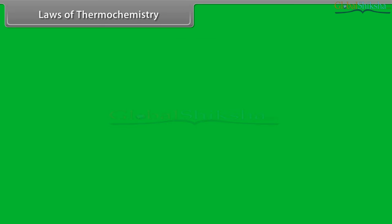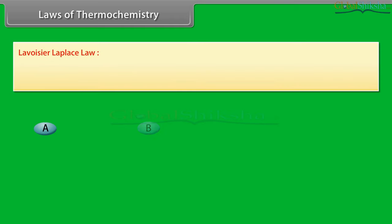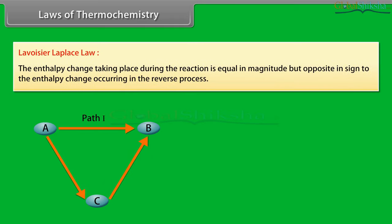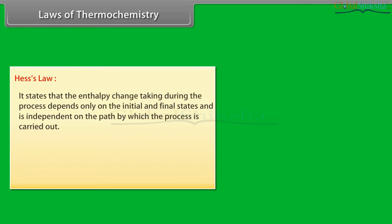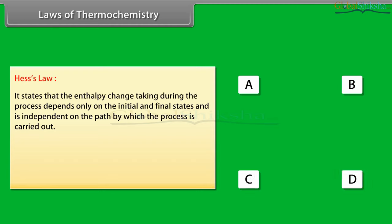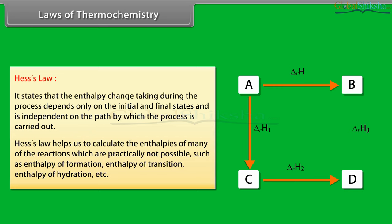Laws of Thermochemistry. Lavoisier-Laplace Law: the enthalpy change taking place during a reaction is equal in magnitude but opposite in sign to the enthalpy change occurring in the reverse process. Hess's Law: the enthalpy change during a process depends only on the initial and final states and is independent of the path by which the process is carried out. Hess's Law helps us calculate the enthalpies of many reactions which are practically not possible, such as enthalpy of formation, enthalpy of transition, enthalpy of hydration, etc.